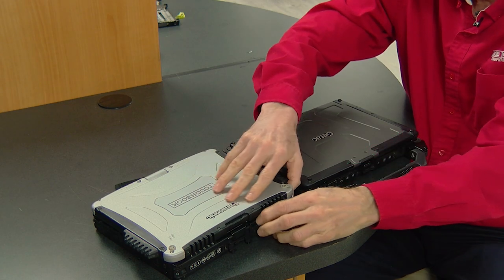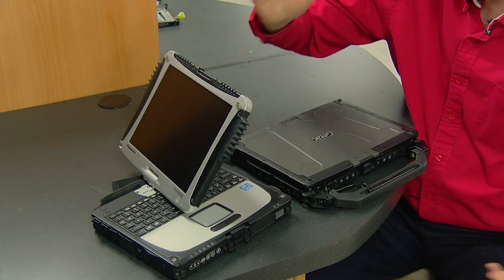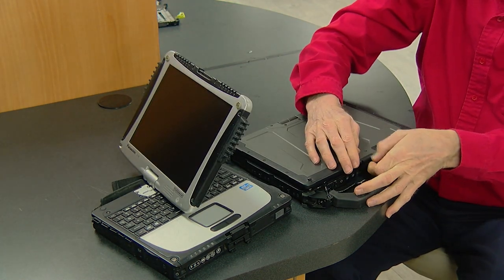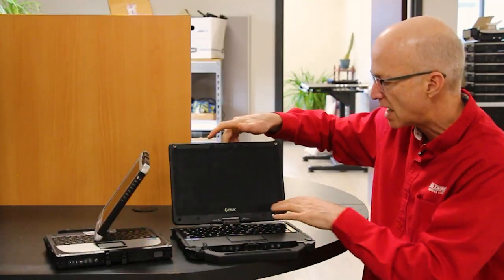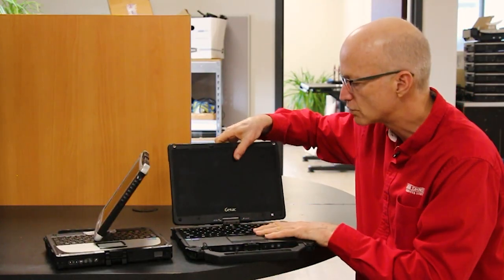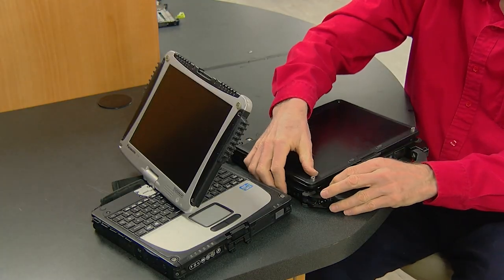Both screens on these two units, both of them spin around so that you have the ability to turn into a tablet. Now, the one thing I did notice is that the G-TAC does not have a lock on the spin around. So when you spin it, you can just spin it around without moving a lock,